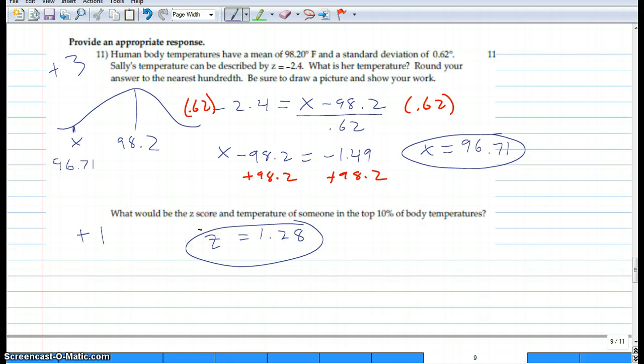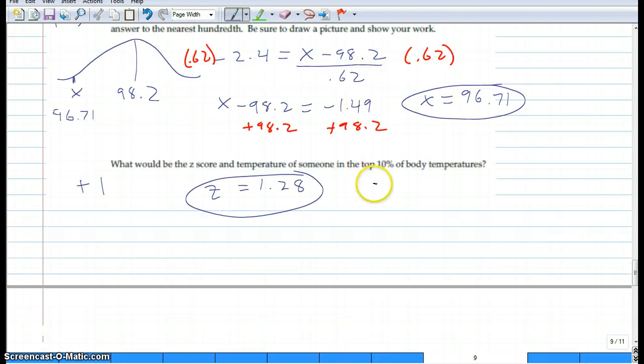Then it says what's the temperature of the top 10%? If you look in your Z table for the top 10%, it's a Z score of 1.28. I accepted all the way up to 1.3 and down to 1.26, but 1.28 is probably as close as you're going to get to the Z score for the top 10%.